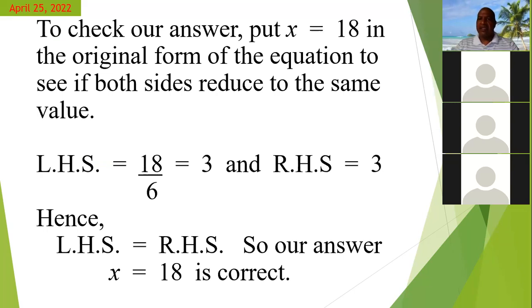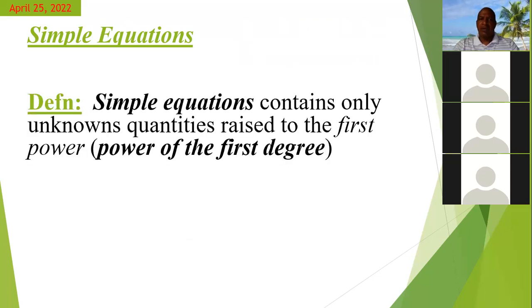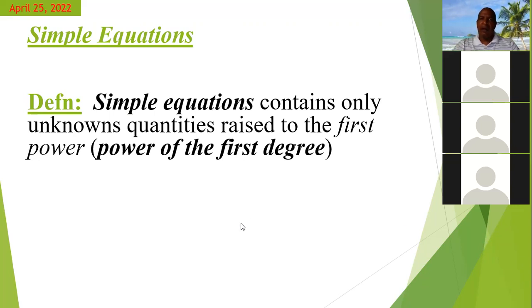Simple linear equations — the definition: a simple equation contains only an unknown quantity raised to the first power or first degree. That simply means the power of the variables equals 1. The power of x and y should not be greater than 1. If it is greater than 1, then you no longer have a simple equation — you would have an equation such as a quadratic or some other form.